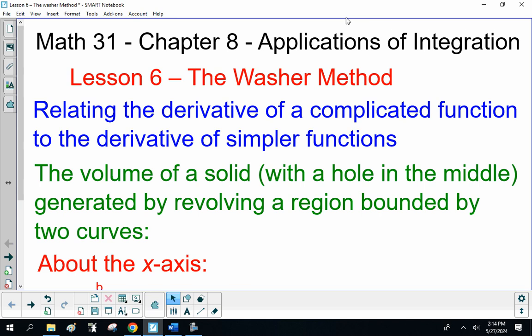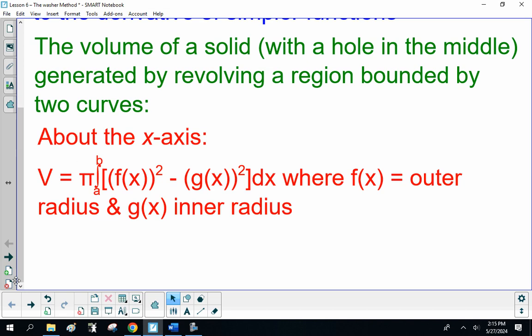There's a bunch of formulas to go with this. The simple one is going around the x-axis. Volume is π times the integral from a to b of [f(x)² - g(x)²]dx, where f(x) is the outer radius and g(x) is the inner radius. Remember volume, πr²h.